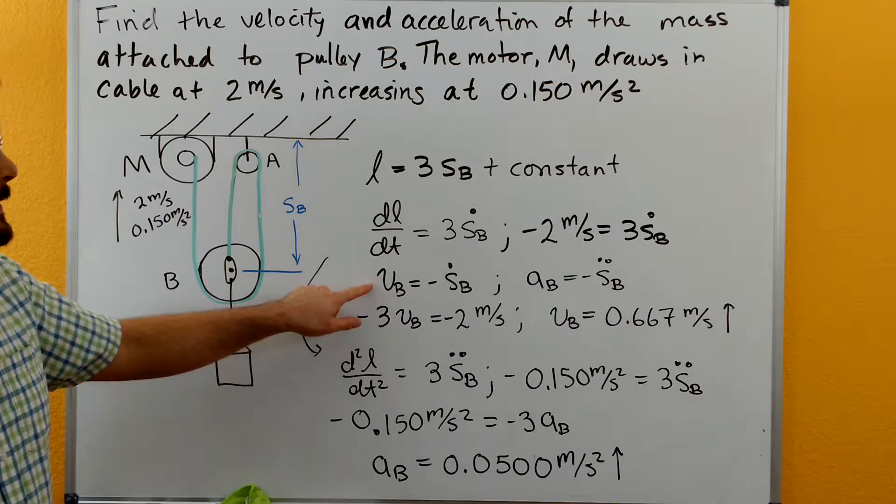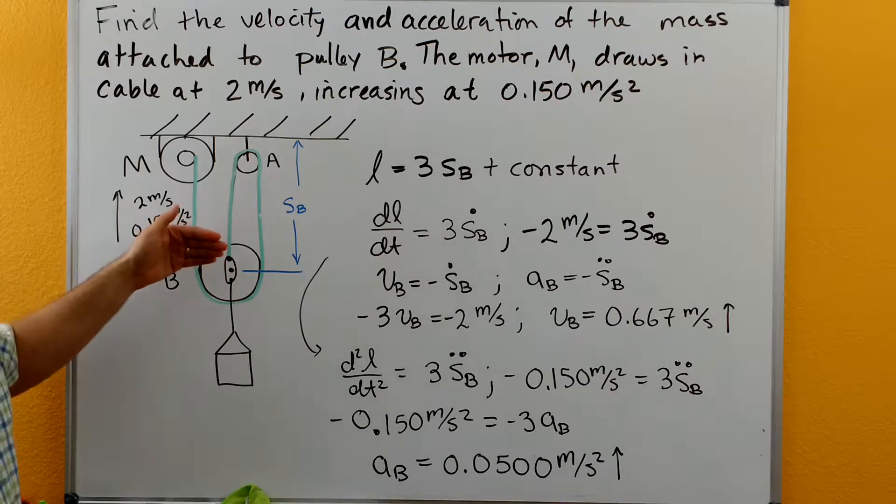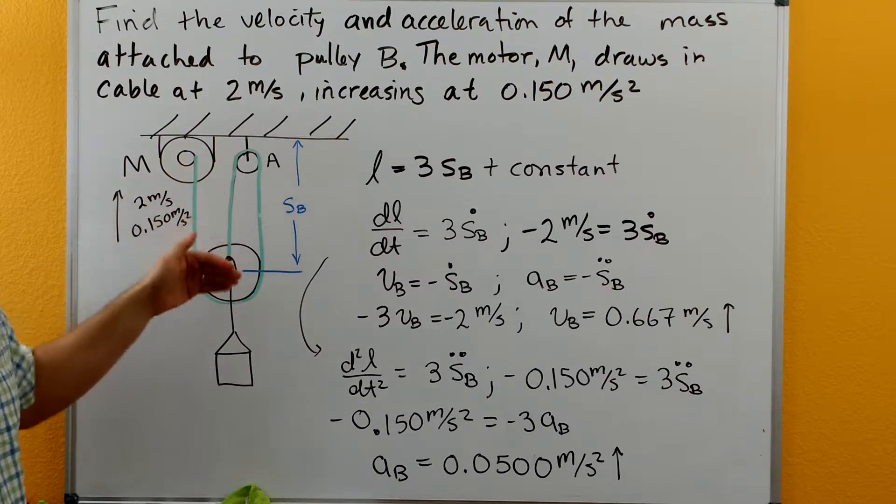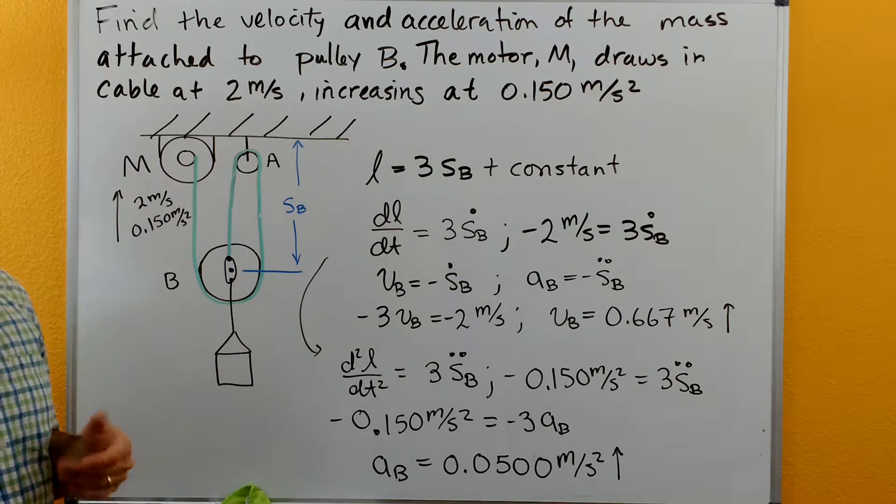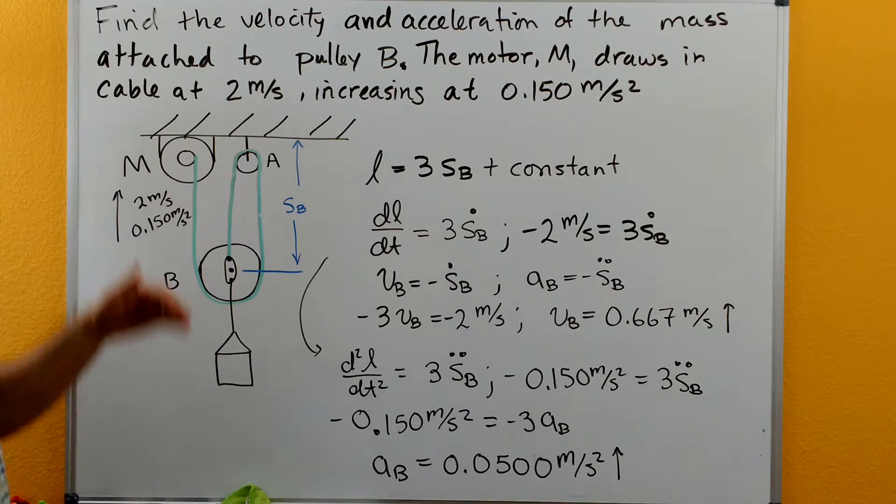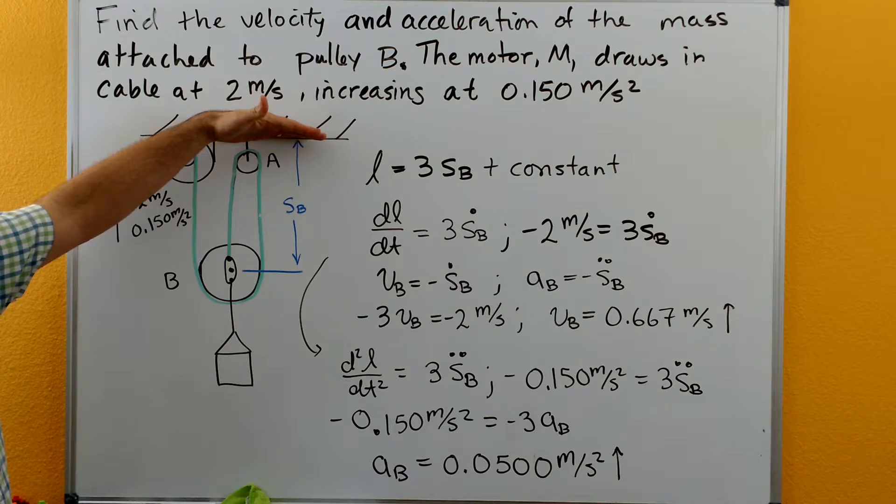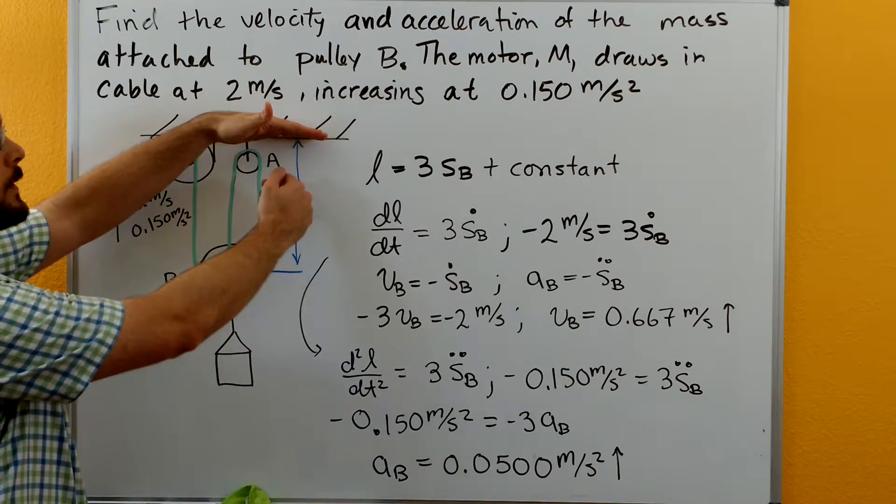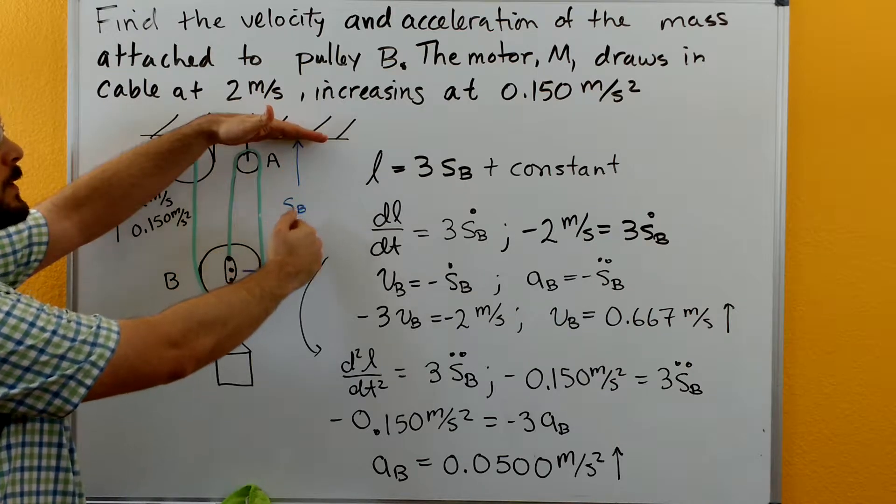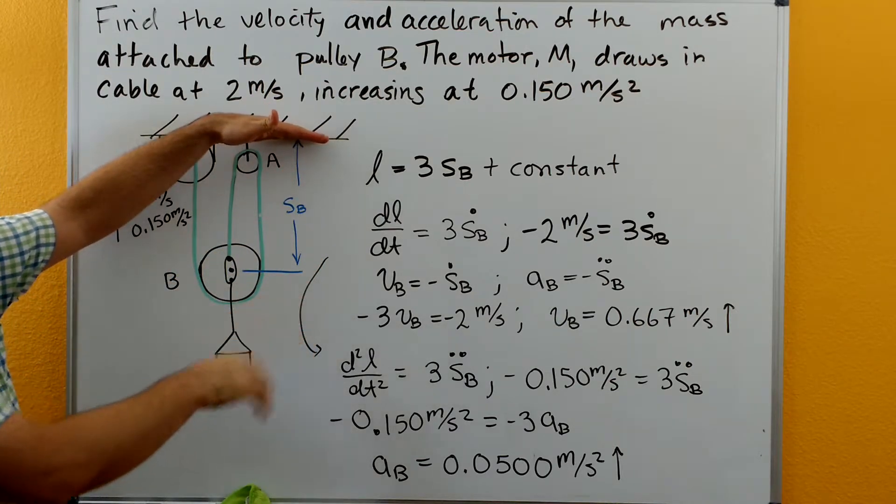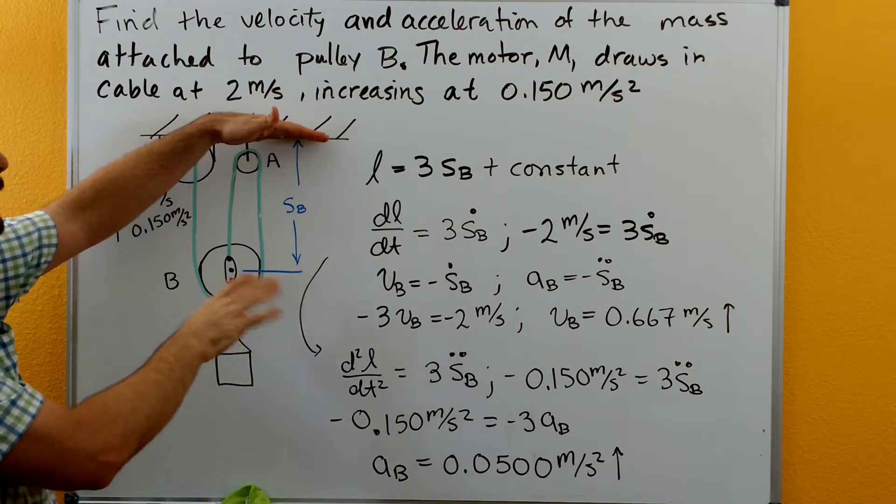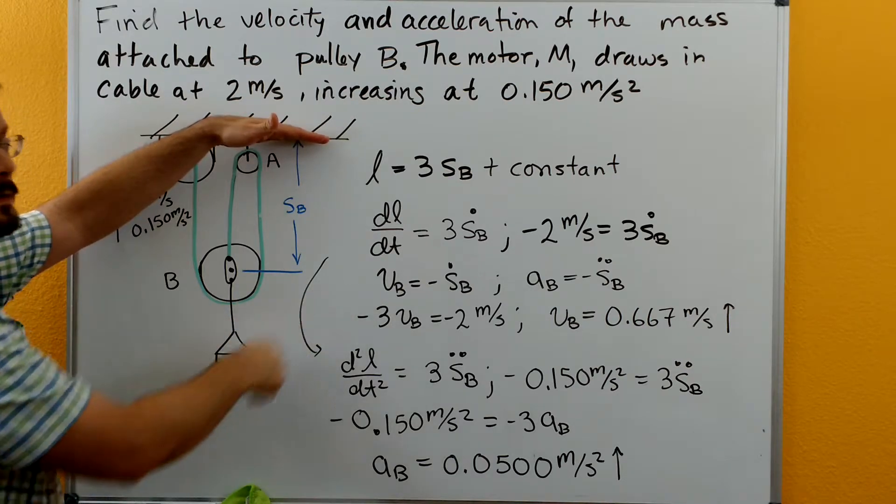Now the velocity at B is going to have the same magnitude as SB dot, but we need to see if it's changing in the same direction. If we think about SB being fixed up here where it touches the ceiling, because the ceiling is not moving, and think about what would happen if SB was to increase - not that it is increasing, just a thought process to get the sign correct.